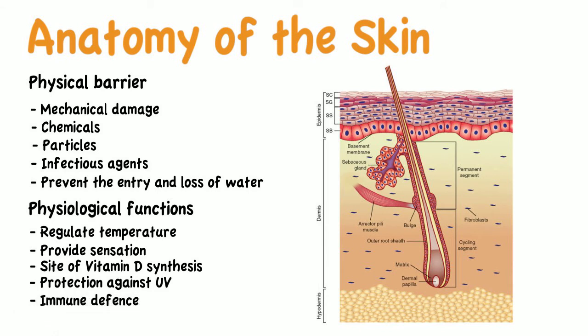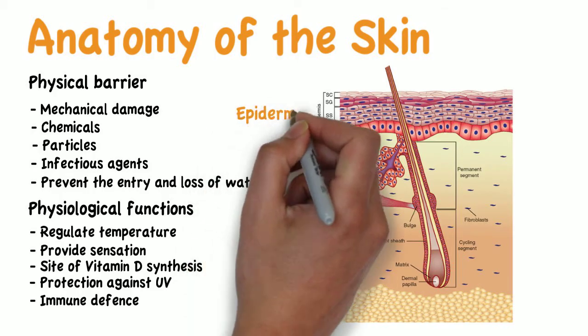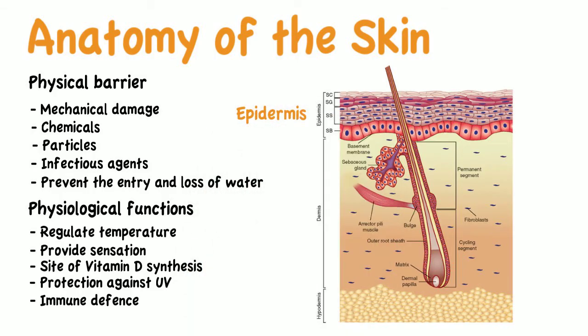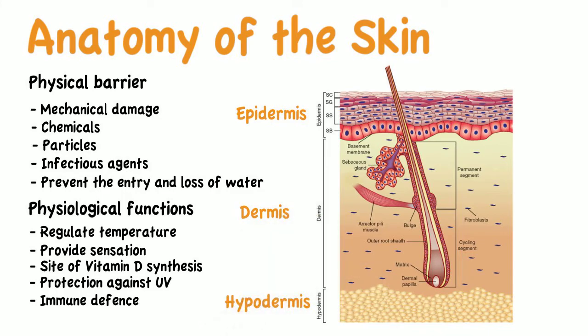The skin is divided into three basic layers: the epidermis, which is the outermost layer; the dermis, which is the middle layer; and the hypodermis, or subcutaneous layer, which is the innermost layer.